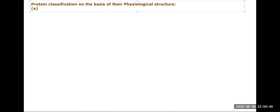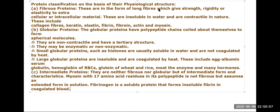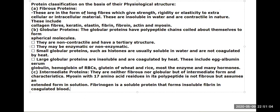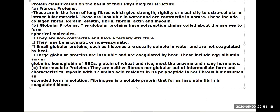The structural classification includes fibrous proteins, globular proteins, and intermediate proteins. Fibrous proteins are in the form of long fibers that give strength, rigidity, or elasticity to extracellular or intracellular material.